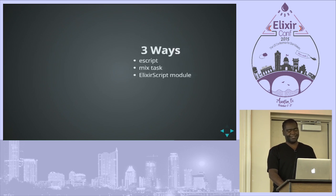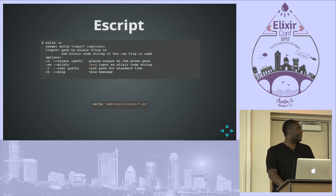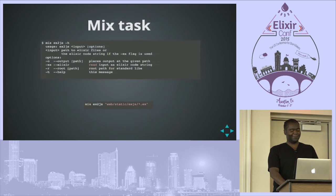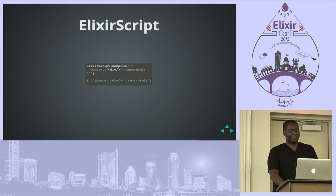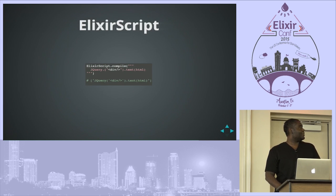So how do you use ElixirScript? There are three ways currently, though I probably need to bring that down to two. There's an EScript built with each release of ElixirScript. There's a Mix task if you add it as a dependency. You can also use the ElixirScript module directly in your code — and this is currently the only way to use macros. If you pass in an environment option, and the macros are required and available, then the ElixirScript compiler is able to expand and use those.